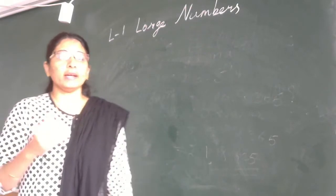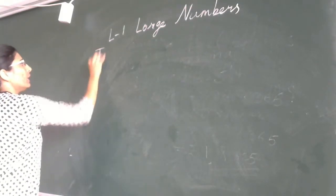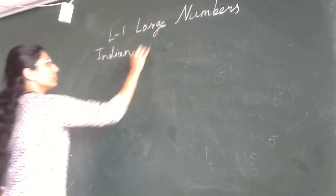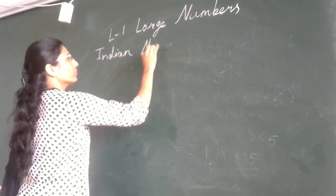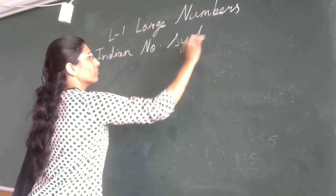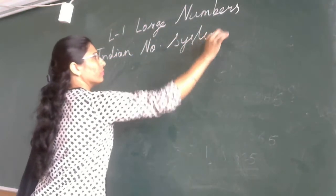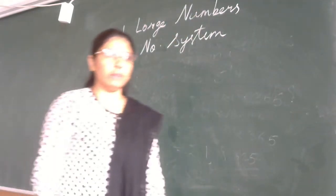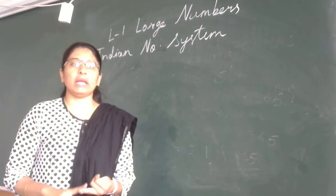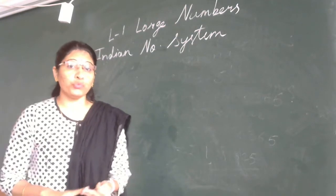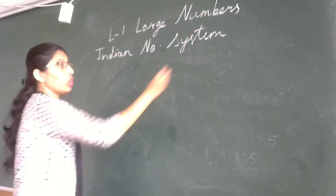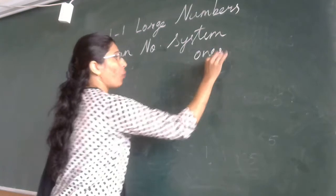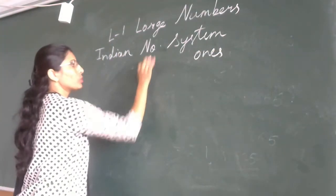Let us first revise the Indian number system. In the Indian number system we have periods and place values. In the first period we have ones and thousands.